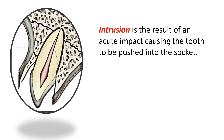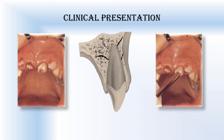Intrusion occurs as a result of an acute impact causing the tooth to be pushed inside the socket. Due to this, there is extensive damage to the pulp and the periodontal ligament. The clinical presentation is that of a tooth pushed into the alveolar socket.